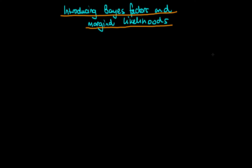In this video I want to introduce the concepts of Bayes factors and marginal likelihoods. To introduce these two concepts we're going to be thinking about the circumstance when we are doing model comparison. The idea is that we have two or more models which we could possibly use to describe a given phenomenon, and we would like to choose between them or say which of them fits the data better.